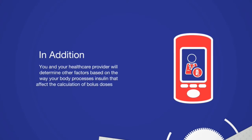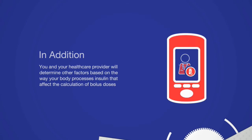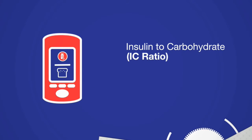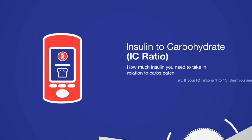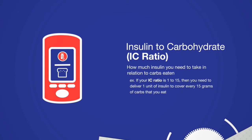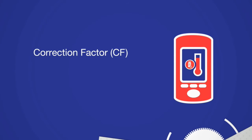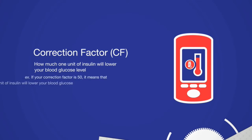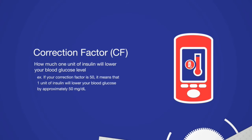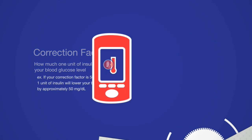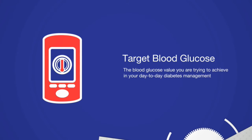In addition, you and your healthcare provider will determine other factors based on the way your body processes insulin that affect the calculation of bolus doses. First, the insulin-to-carbohydrate ratio, or IC ratio, tells you how much insulin you need to take in relation to carbs eaten. For example, if your IC ratio is 1 to 15, then you need to deliver 1 unit of insulin to cover every 15 grams of carbs that you eat. Next, the correction factor, or sensitivity factor, tells you how much 1 unit of insulin will lower your blood glucose level. For example, if your correction factor is 50, it means that 1 unit of insulin will lower your blood glucose by approximately 50 milligrams per deciliter. Finally, your target blood glucose value is the blood glucose value you are trying to achieve in your day-to-day diabetes management.